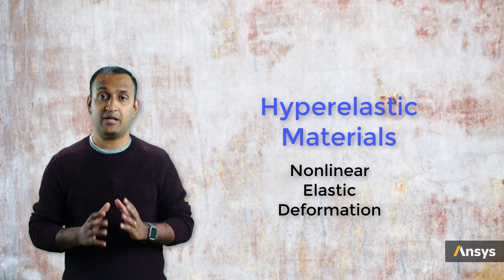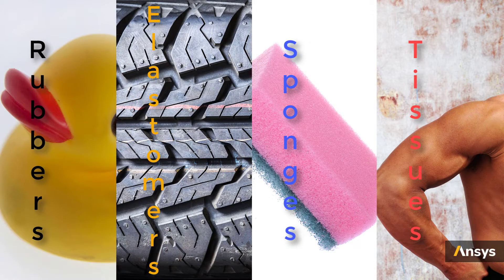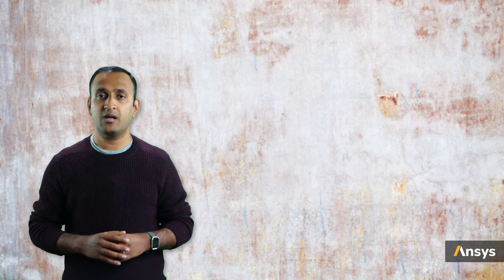In very simple terms, hyper-elastic materials can be defined as the class of materials that can undergo non-linear elastic deformation. Typical examples of these materials that showcase such behavior are rubbers, elastomers, soft tissues, foams, and many more. Typically, most soft materials behave this way and may be classified as hyper-elastic materials.